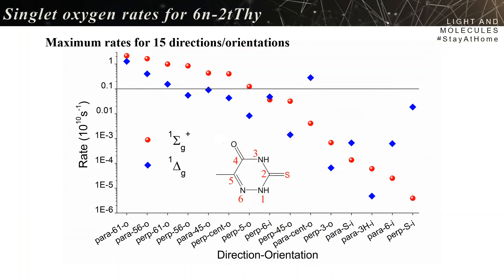We have the oxygen reaching the thiamine parallel to the plane, out of plane, towards atoms 6-1 or towards atoms 5 and 6. So those codes here in the horizontal axis indicate the several different directions.